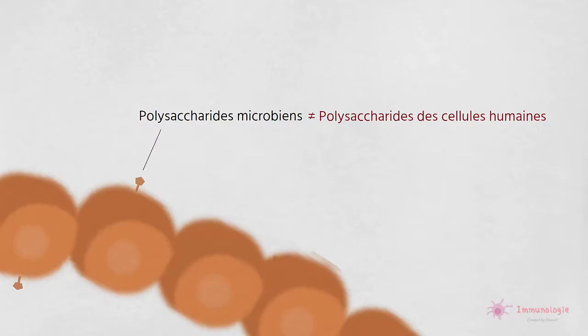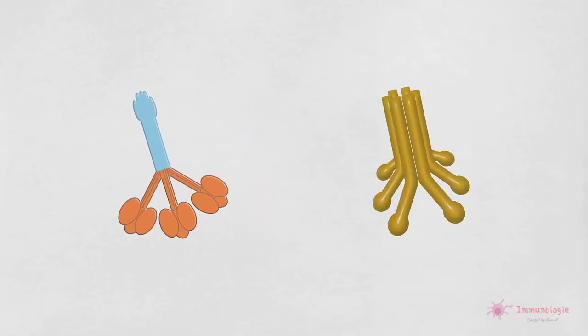Et pour cette raison, la voie des lectines est considérée comme un bras de l'immunité innée. Les premières molécules de la voie des lectines sont structurellement similaires à celles de la voie classique. La MBL est une protéine plasmatique qui ressemble structurellement au C1Q, l'initiateur de la voie classique.